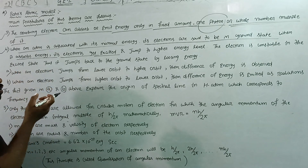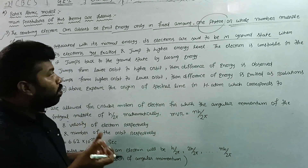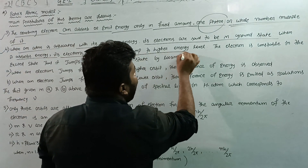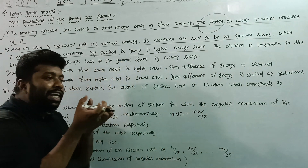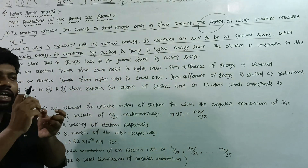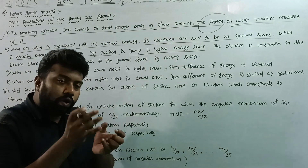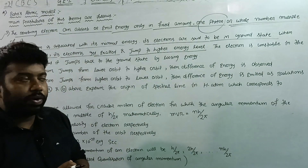When the electron absorbs energy, it gets excited and jumps to a higher energy level. The higher energy level is a higher energy state, and the lower energy level is a lower energy state.